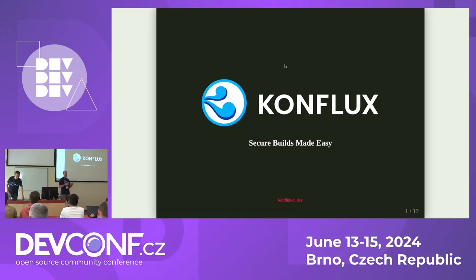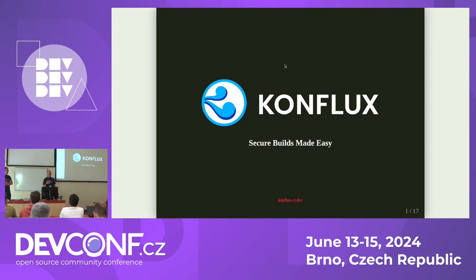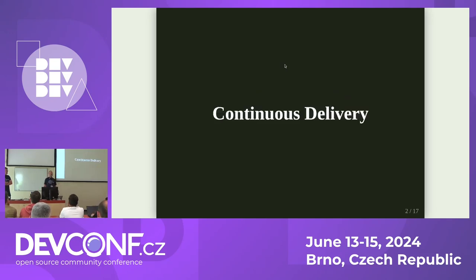Welcome everybody. My name is Brian Cook, I'm a product manager at Red Hat, and this is Ralph Bean, the project architect for Conflux. Conflux is a continuous integration and continuous delivery system we've been building as an open-source project at Red Hat. Here at DevConf yesterday, we did our very first workshop where about 50 people tried installing Conflux on their laptops — our first community-installable artifact, which is super exciting.